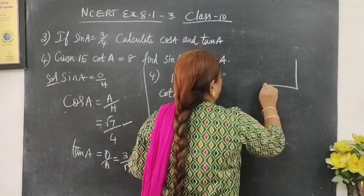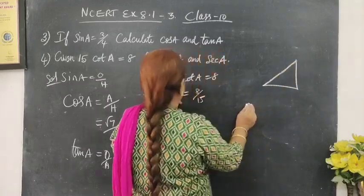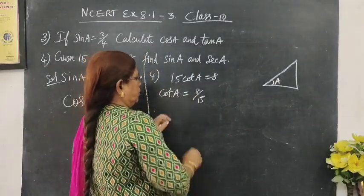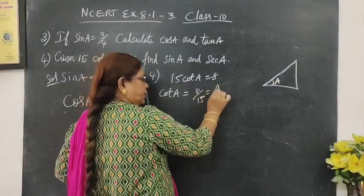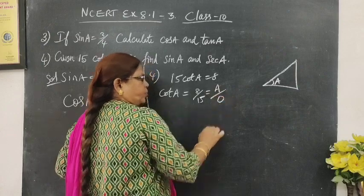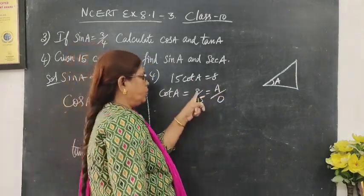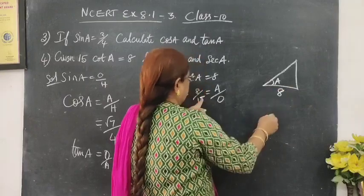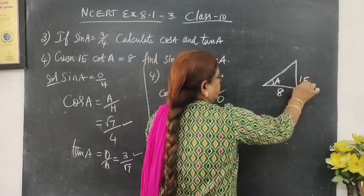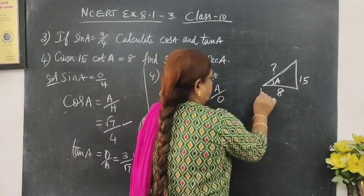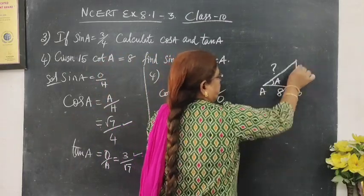Cot A equal to, if it is angle A, cot A is adjacent by opposite. What is adjacent? 8, opposite 15. So hypotenuse we have to find. Let it is angle A, so let it be A, B, C.